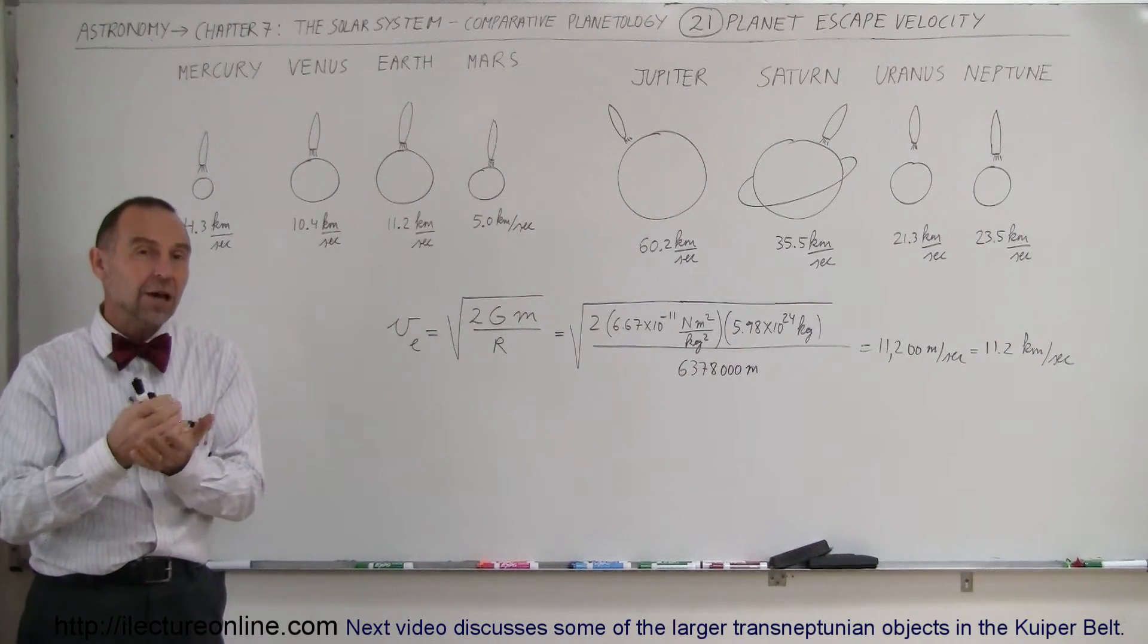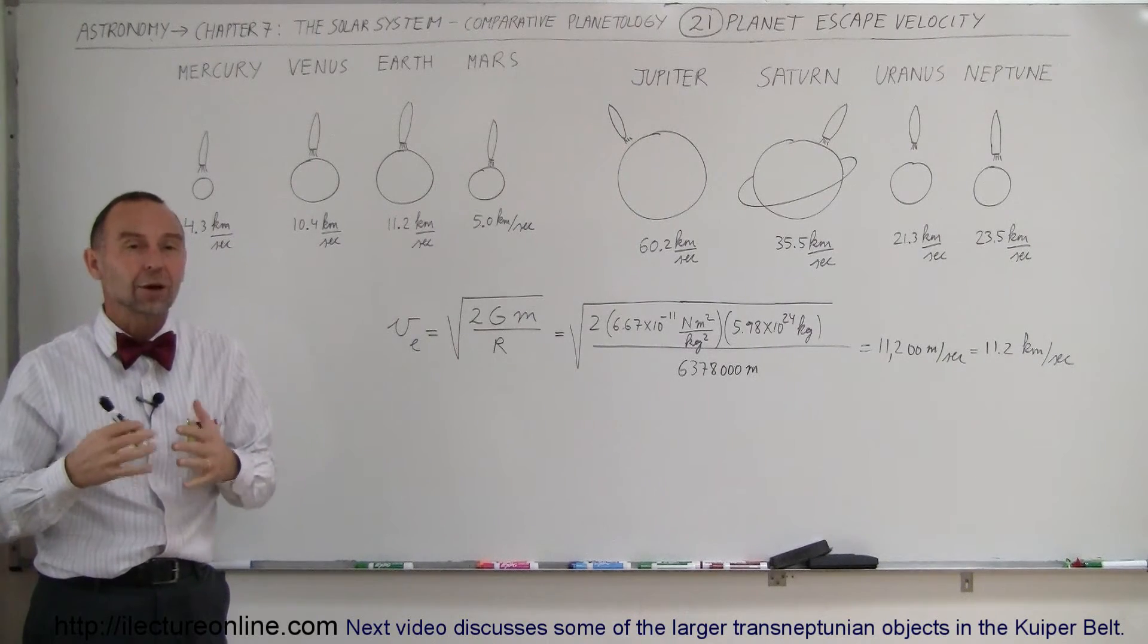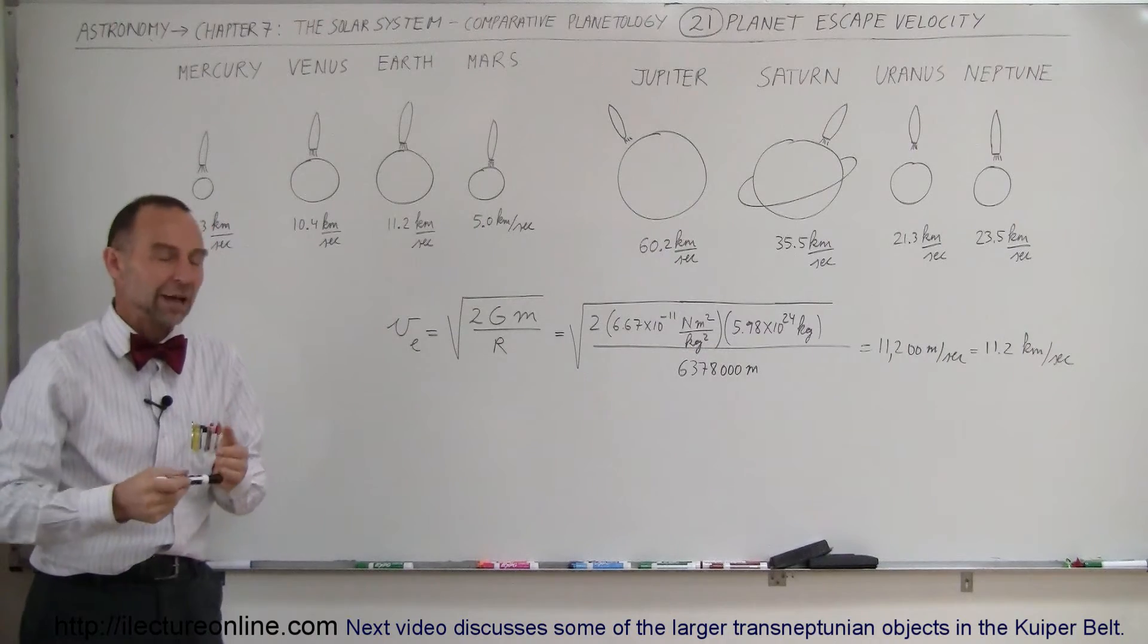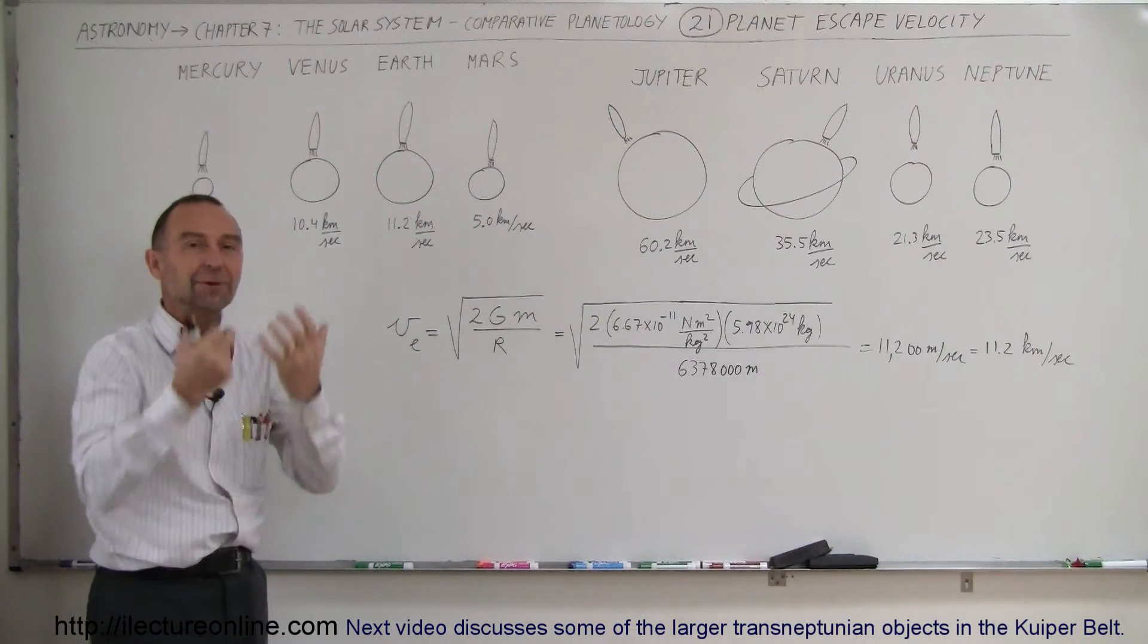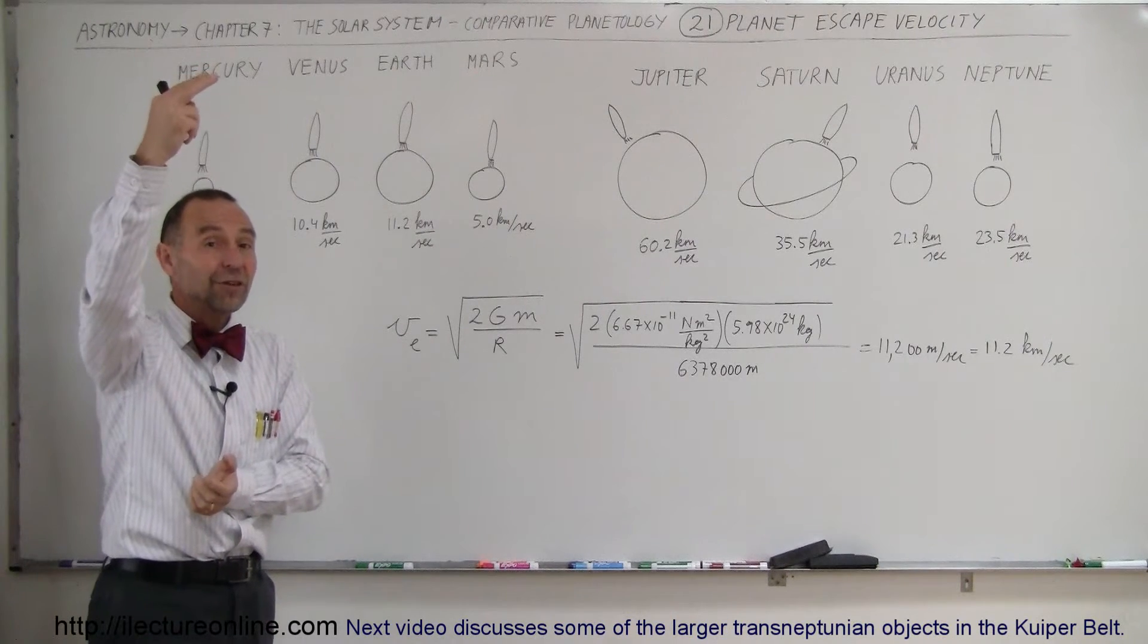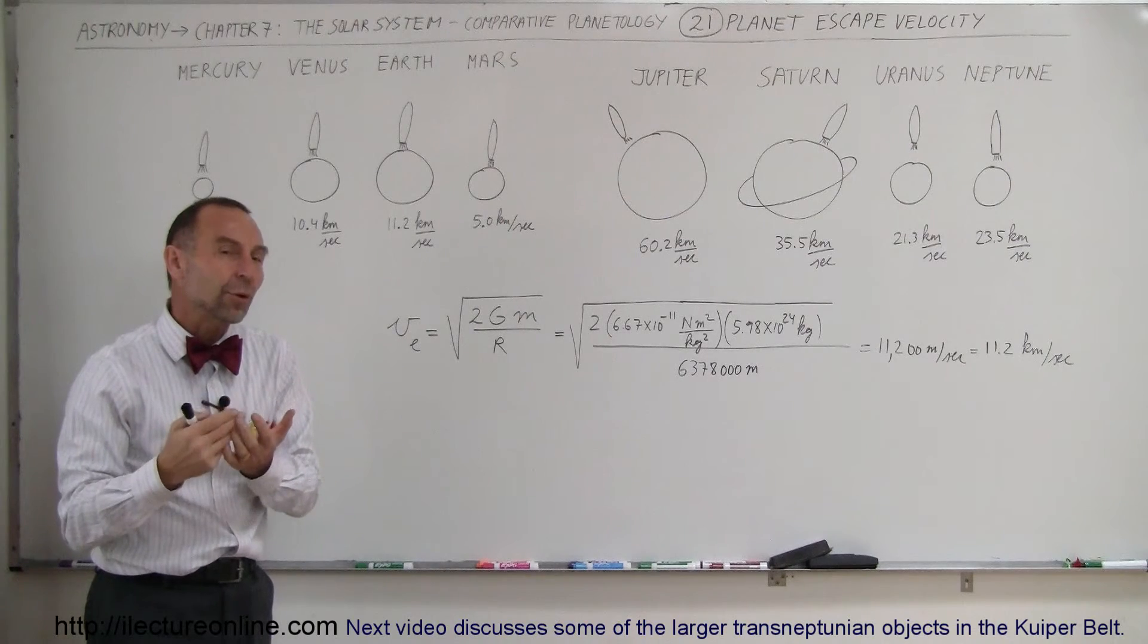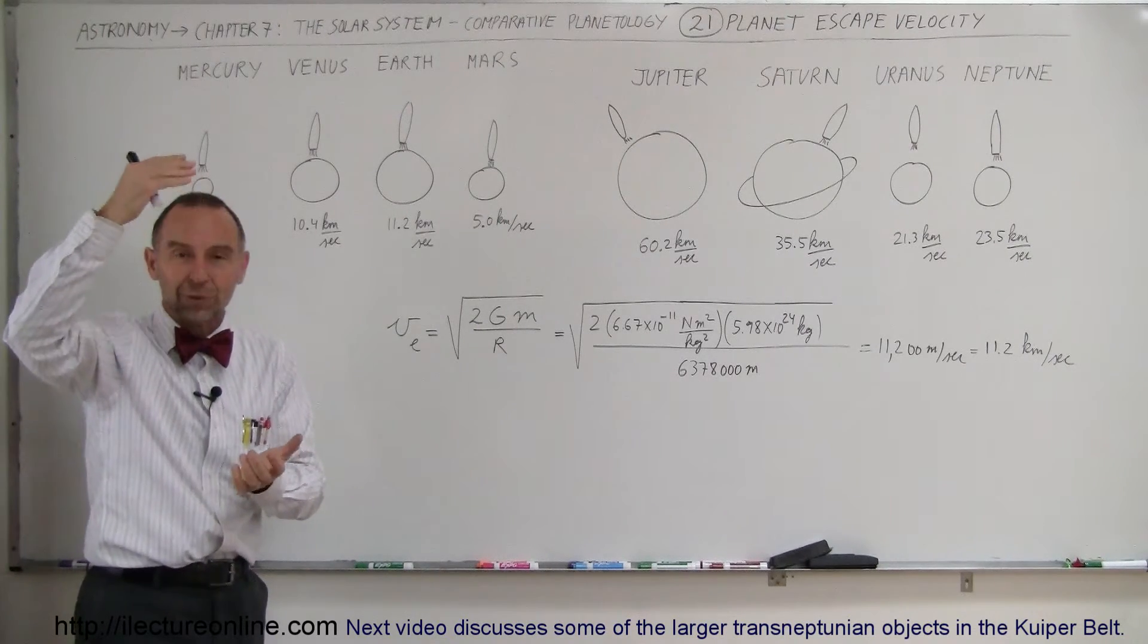It's the velocity an object has to have to get away from the gravitational attraction of the planet, otherwise the planet will simply pull it back. So when you throw something up, it comes right back down because of the gravitational attraction. If I throw it faster, it will go higher, but eventually it will come back down. How fast do I need to throw it so that it will go so fast that it will never come back?